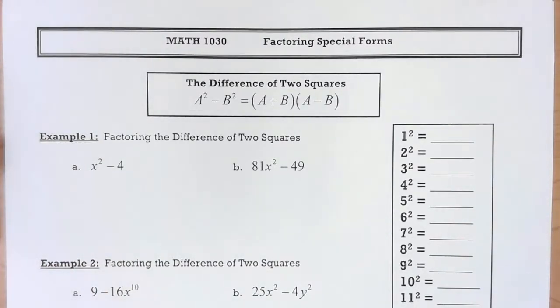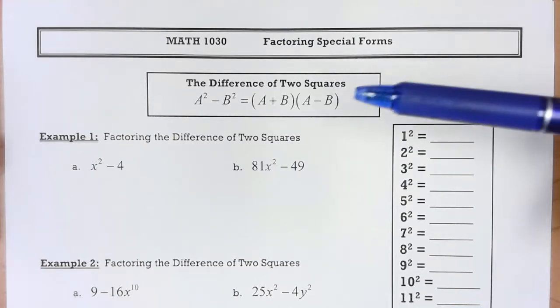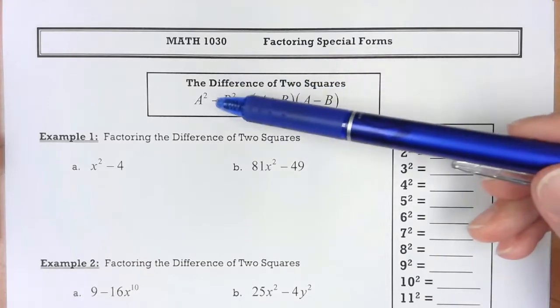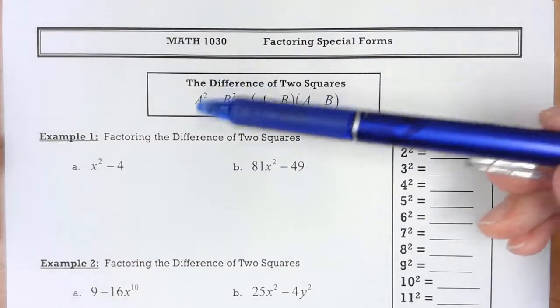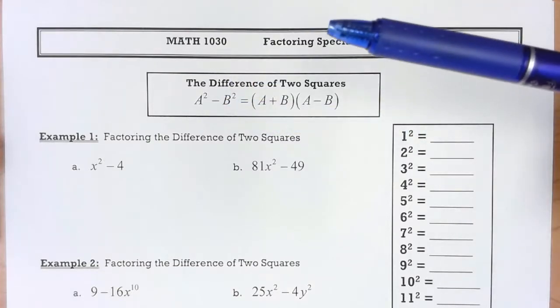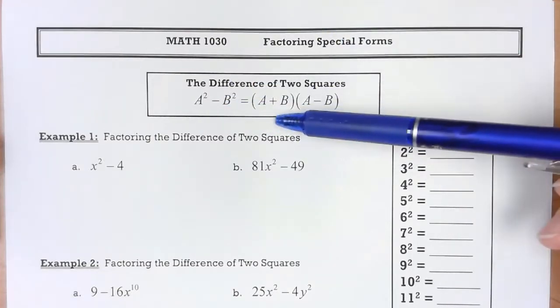Looking at factoring special forms, the first one we look at is one that you'll see most often, and that's when you have a difference of two squares. If you have a difference, and your first item is a perfect square and your last item is a perfect square, then it can be factored in this form.